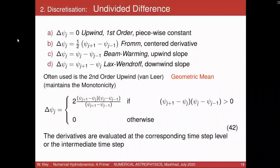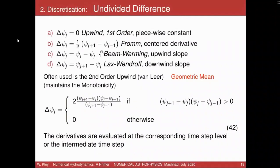There are different possibilities. Here are some: A) psi_j = 0, meaning a piecewise constant function as in the first order upwind scheme. Then we can take one-sided differences. The Fromm scheme uses a centered derivative. The Beam-Warming scheme uses an upwind one-sided difference. The Lax-Wendroff scheme uses a downwind slope. You can see how the slopes are calculated from the diagram with psi_{j+1}, psi_j, and psi_{j-1}.